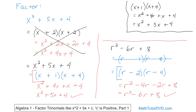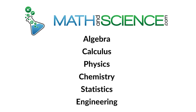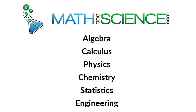To conclude: the recipe is always the same. Write down the first terms to give the leading term, then write numbers that multiply to give the constant, and choose the signs correctly to produce the middle term. You can always check your answer because when you multiply the binomials back out, you should get what you started with. Follow along to the next section and we'll continue the skill in algebra at mathandscience.com.